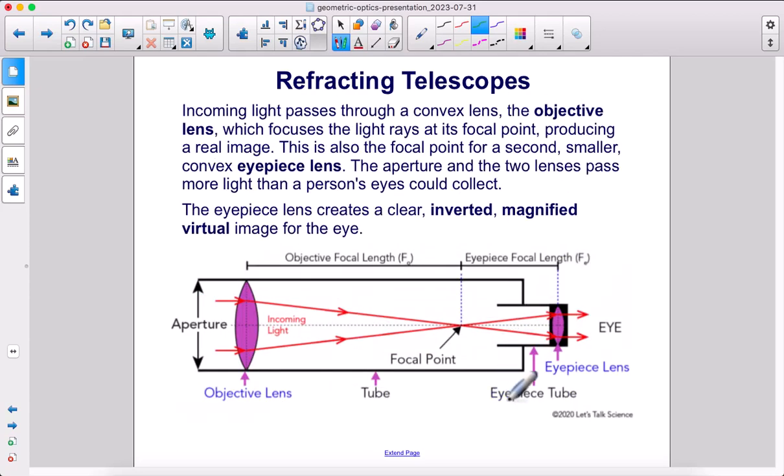Here's a refracting telescope. Incoming light passes through a convex lens, which is called the objective lens, which focuses the light rays at its focal point here, producing a real image. This is also the focal point for a second, smaller, convex eyepiece lens. The aperture and the two lenses pass more light than a person's eyes could collect. The eyepiece lens creates a clear, inverted, magnified virtual image for the eye.